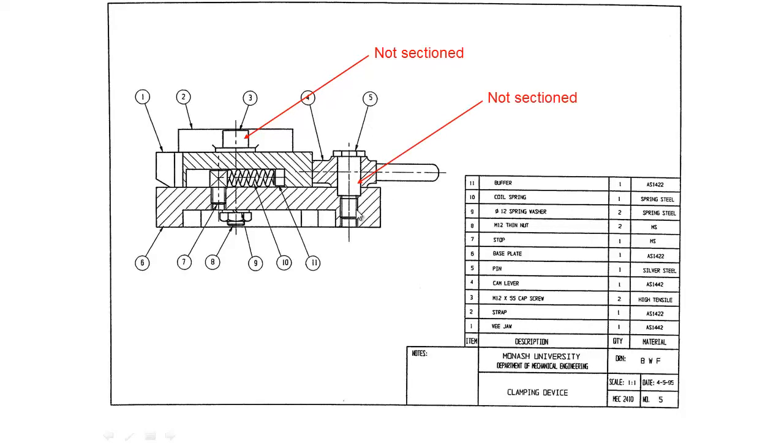So we also haven't sectioned this part here, part number 5 which is a pin which allows for this handle to pivot. So it's part of a pivot system. We also have this part number 7 which is our stop.